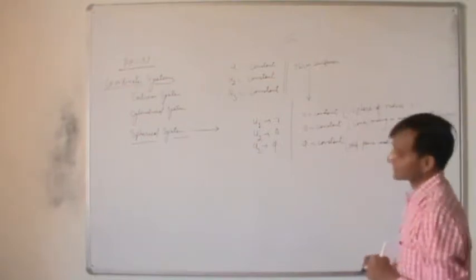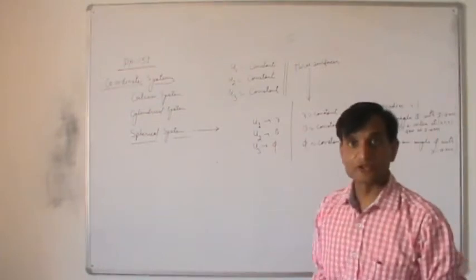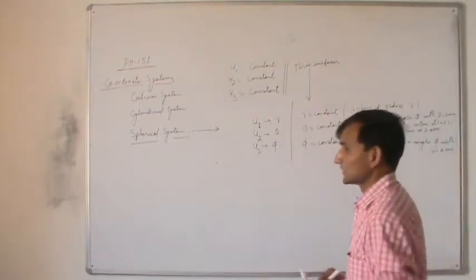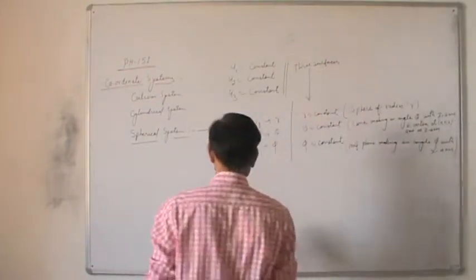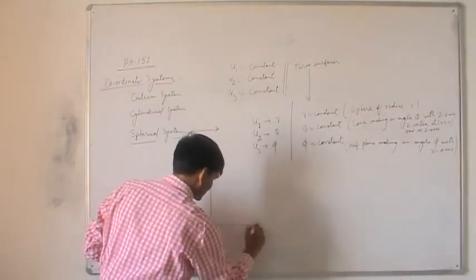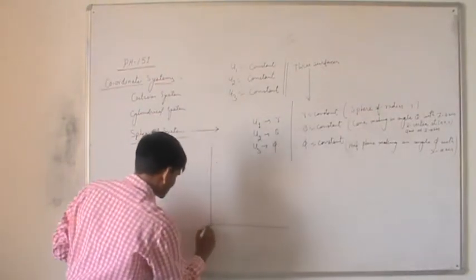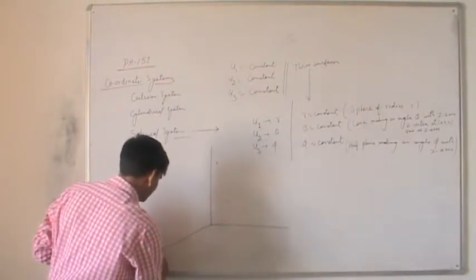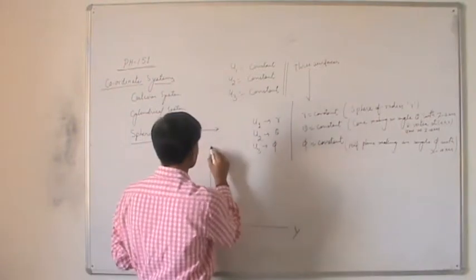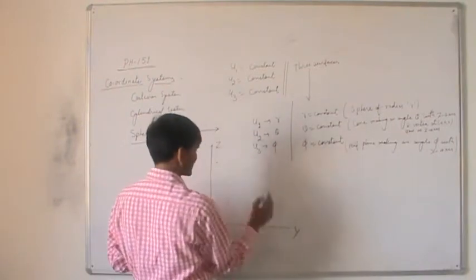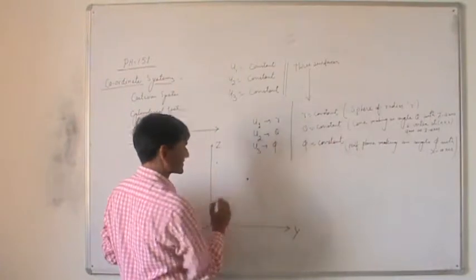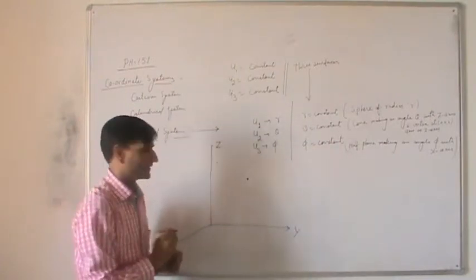These are the three surfaces we use to define the spherical coordinate system. If I draw a diagram superimposing with the X, Y, Z system — this is the Cartesian coordinate system — and suppose I represent a point P.